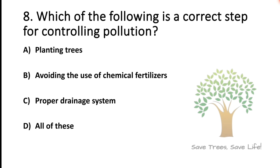Question number 8. Which of the following is a correct step for controlling pollution? Option A: Planting trees. Option B: Avoiding the use of chemical fertilizers. Option C: Proper drainage system. Option D: All of these. So the answer is option D, All of these.